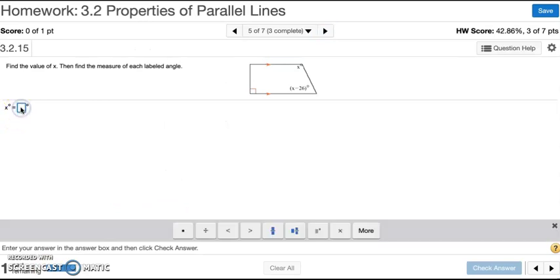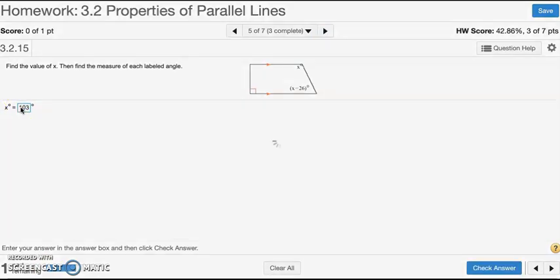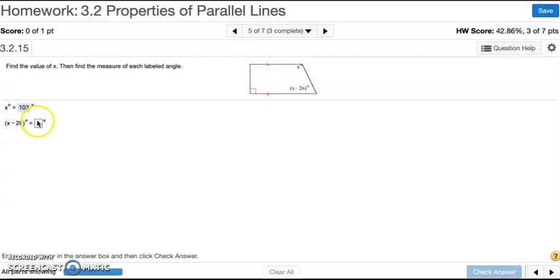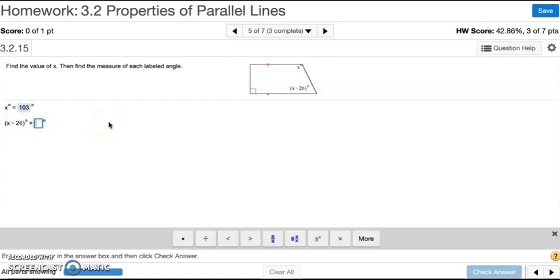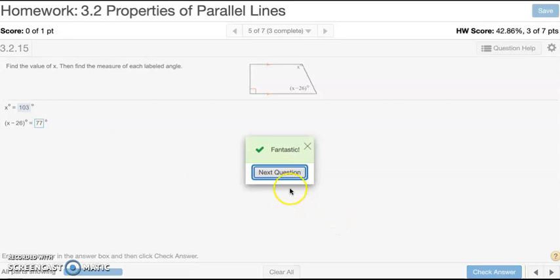So x is 103. And then x minus 26, the other angle, is 77. And that's number 5.